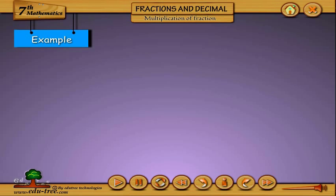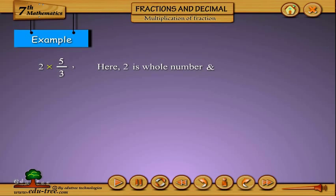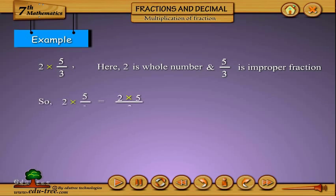Example: 2 into 5/3. Here, 2 is a whole number and 5/3 is an improper fraction. So, 2 into 5/3 equals (2 into 5) divided by 3, which equals 10/3.